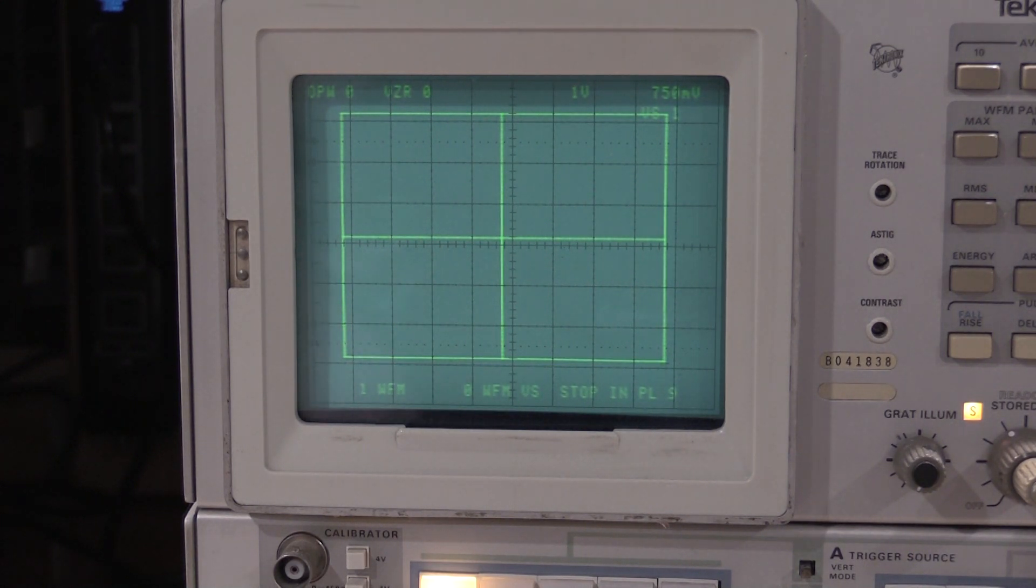Now that is supposed to line up with the graticule on the scope. That is off by about 0.2 divisions. It is supposed to be within 0.05, so obviously we have some adjustments we need to make.